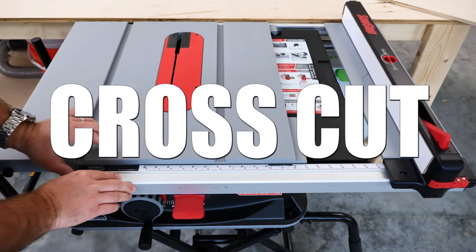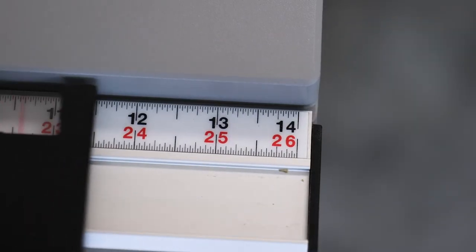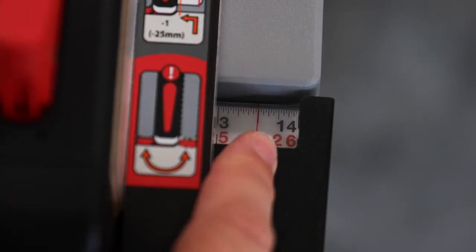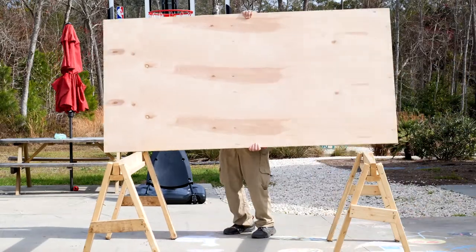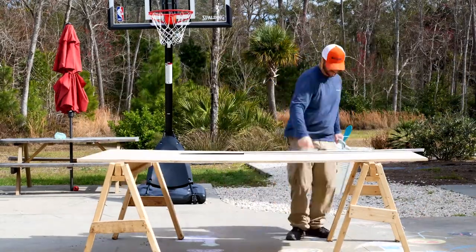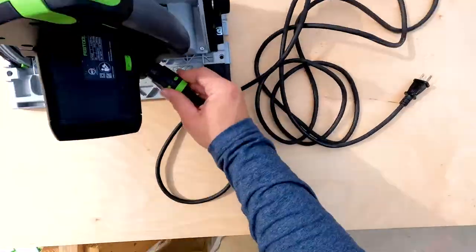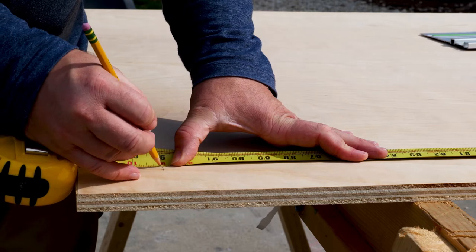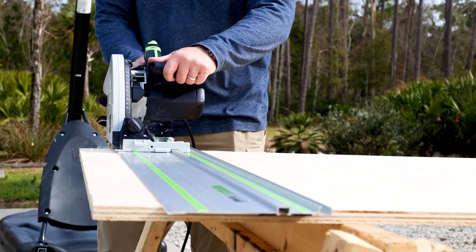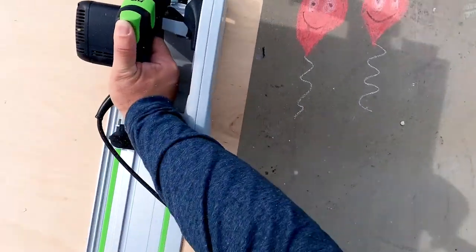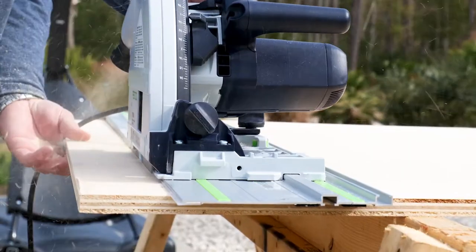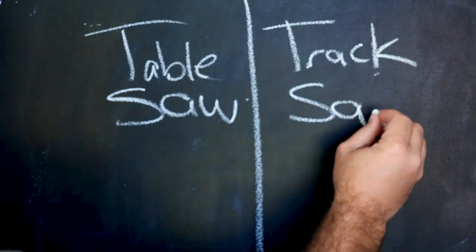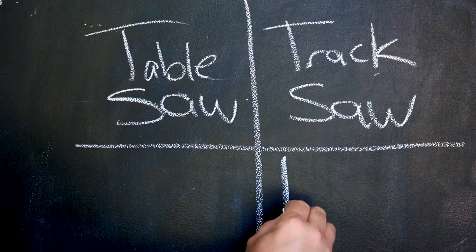Round number one. Let's talk about cross-cut capacity. As you can see on this table saw, I've only got about 25 and a half inches of cross-cut capacity. Now, let's see what the track saw can do. Oh, you need a sheet that's 93 inches long? Yeah, no problem. This is where the track saw excels. Table saw zero. Track saw one.